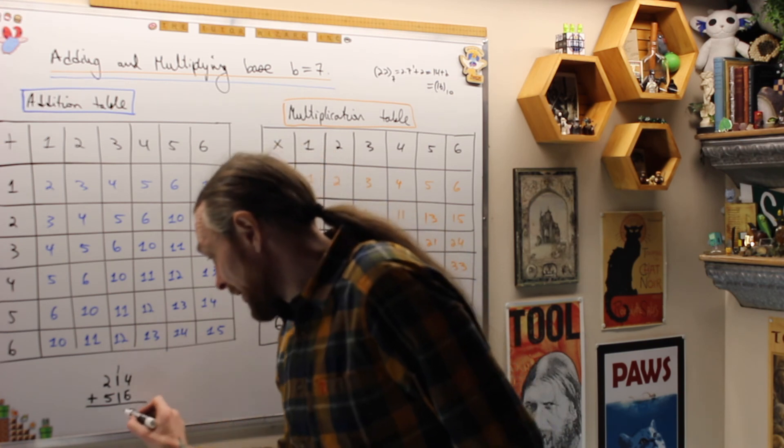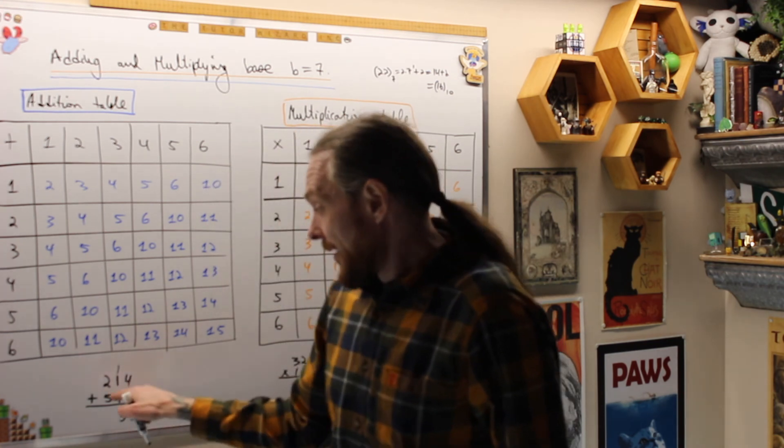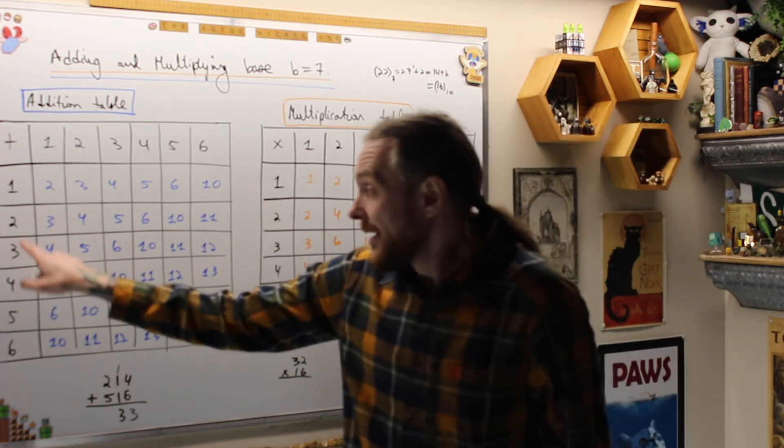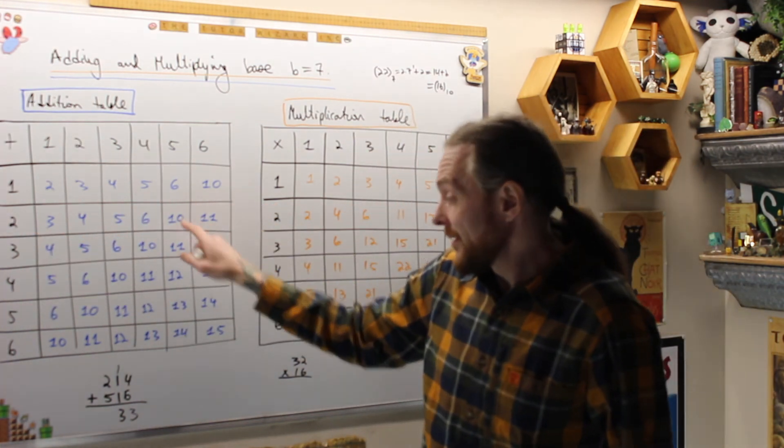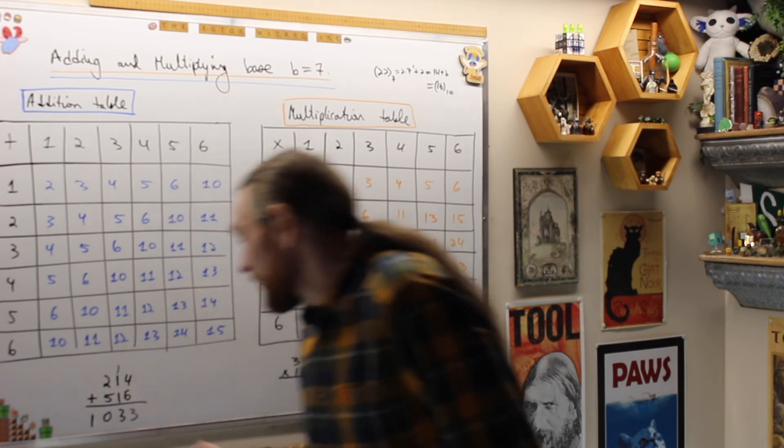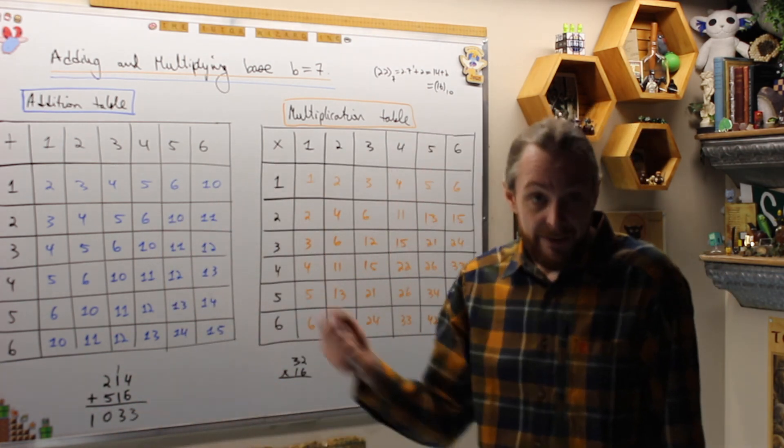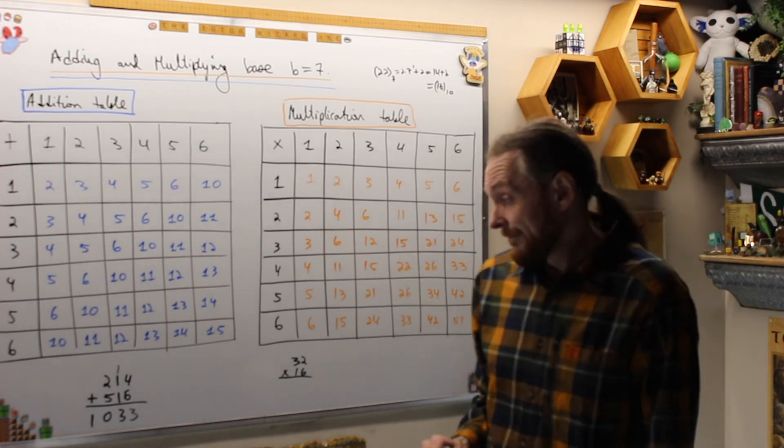And then I get 1 plus 1 plus 1 is a 3 again. And then I get 5 plus 2 is 7, but that's 1-0. Again, 2 plus 5 is 1-0. So 1033 is the answer to 214 plus 516 in base 7.